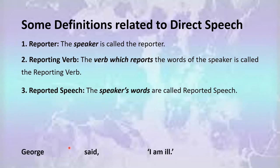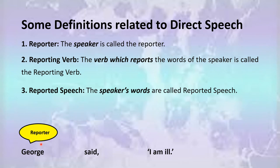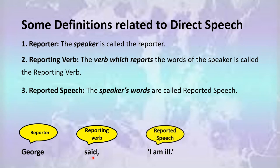See the example: George said, 'I am ill.' George here is the reporter. Said is the reporting verb. You find the reporter and the reporting verb in the reporting speech. The words inside the inverted commas, which are the words of the speaker, are known as reported speech.